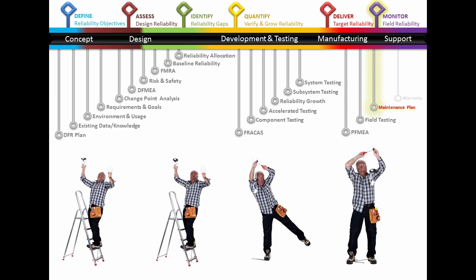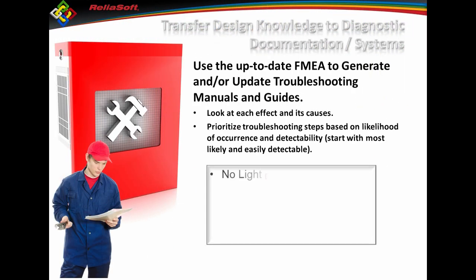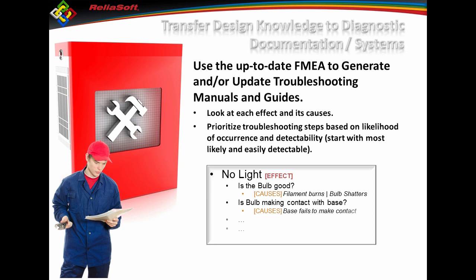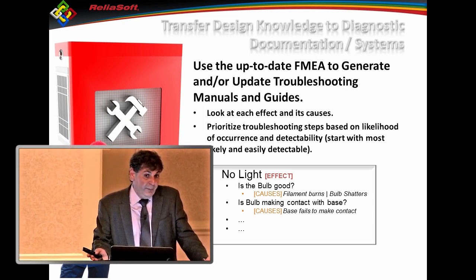Before I get there, I mentioned that up front: if I have that list of component failure modes, causes, and effects, I can automatically generate diagnostics. I take every effect — say, no light — and go through which is the most likely cause, then phrase it into English questions: is the bulb good? Is the bulb making contact with the base? So now I've got a whole repair guide or diagnostics coming from my original work without needing more engineering work. All I need is someone — like an English major — to convert those into sentences that make sense. That's a lot cheaper than getting engineers involved.